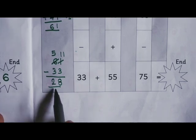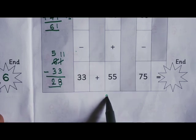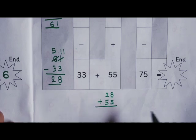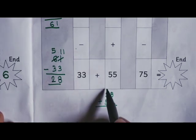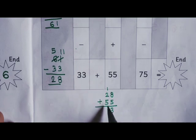After this, 28 plus 55. 8 plus 5 is 13. So 3 here, 1 carry. 1 plus 2 is 3. 3 plus 5 is 8. 83 is the answer.